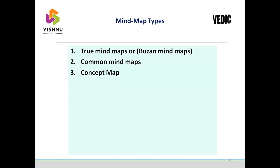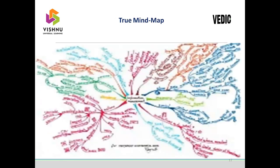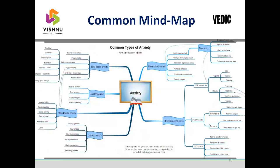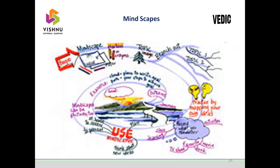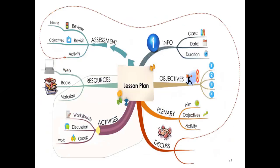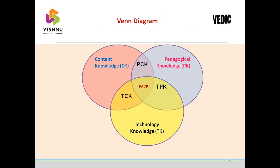Mind map types: the true mind map introduced by Buzan is called the Buzan mind map. Other types include common mind maps, concept maps, mindscapes, tree diagrams, and logic diagrams or Venn diagrams. Here is an example of a true mind map, a common mind map, a concept map, a mindscape, and examples of a tree diagram and a Venn diagram.